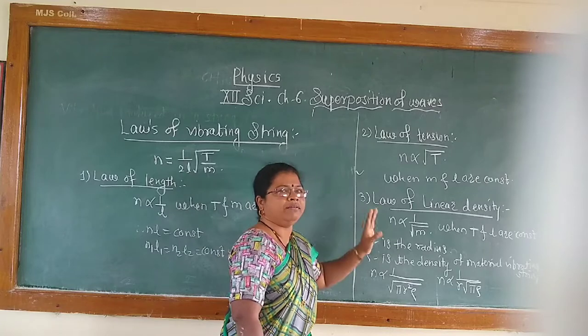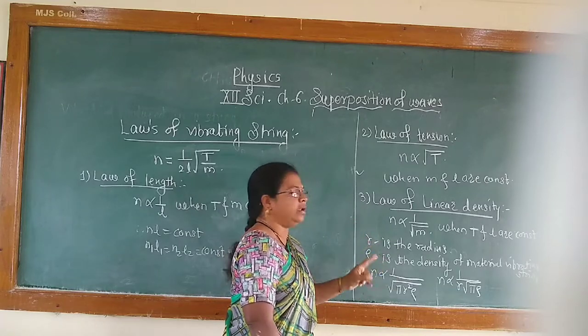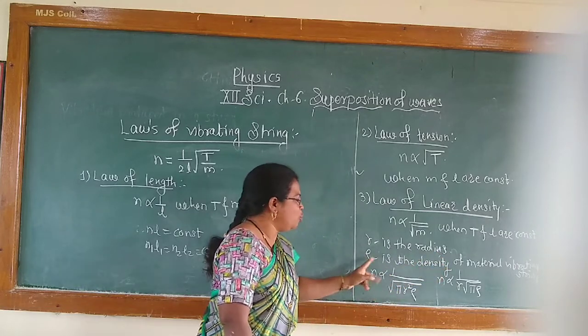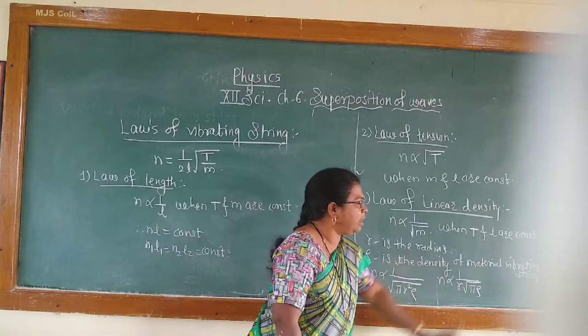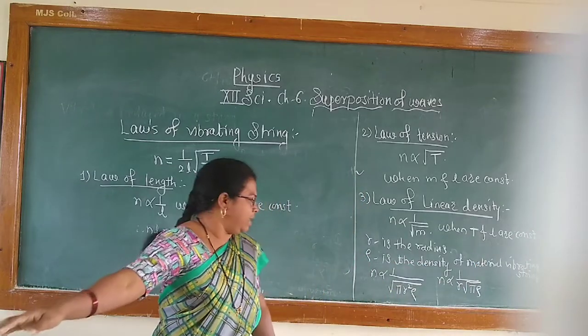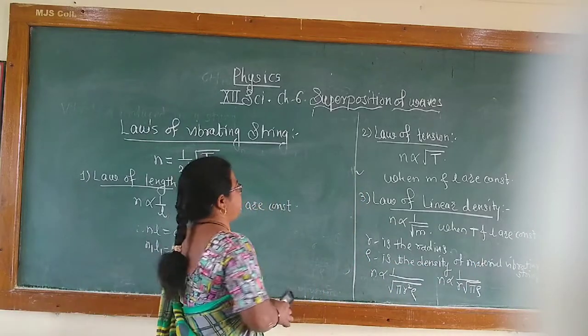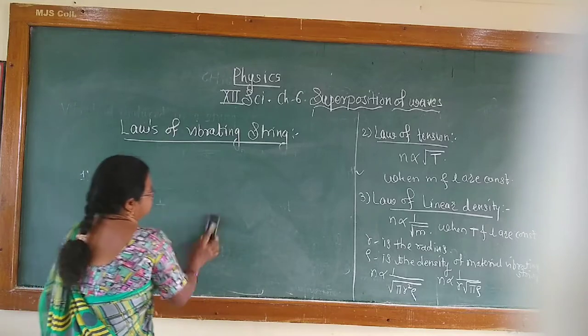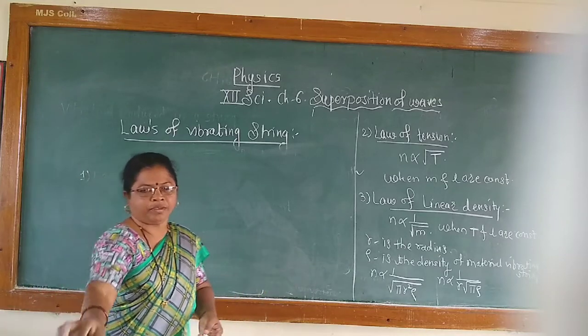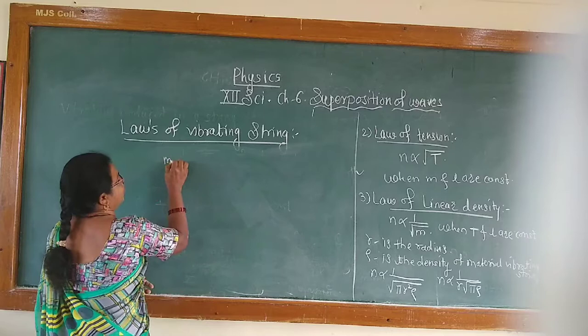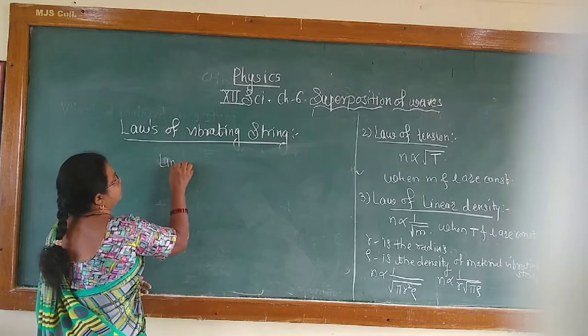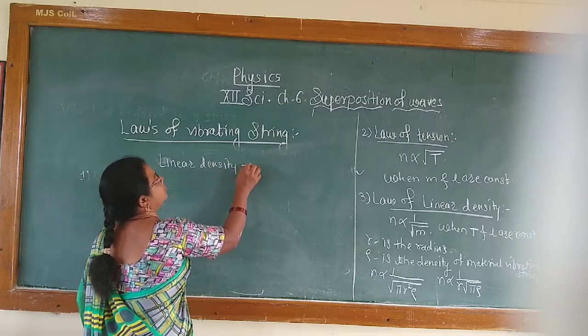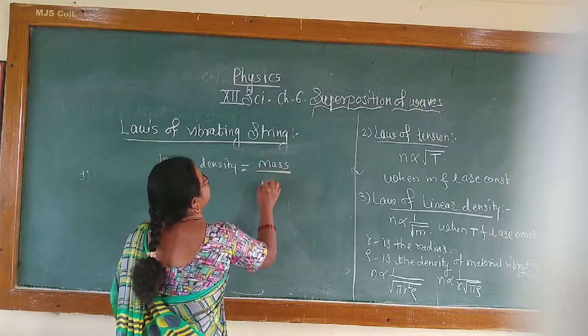Now, one more. Suppose R is the radius of that string, rho is the density of the vibrating string. Then, linear density, small M or linear density is equal to mass per unit length.